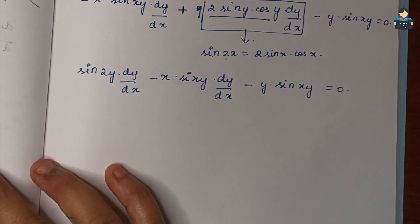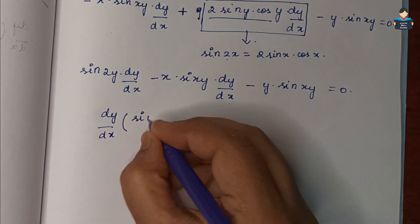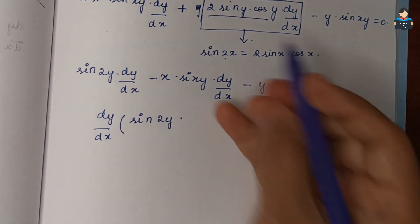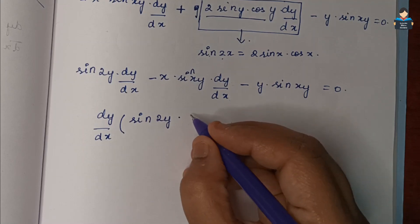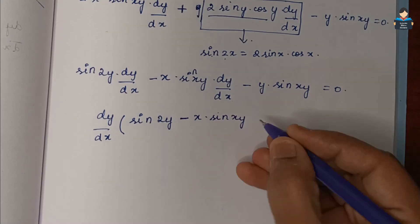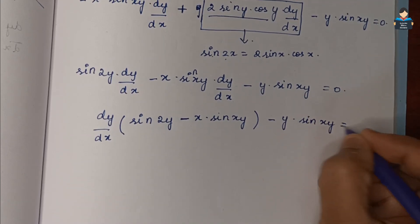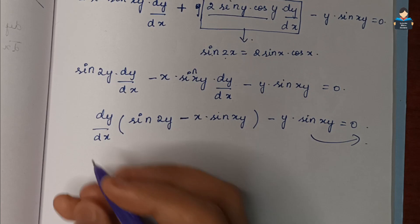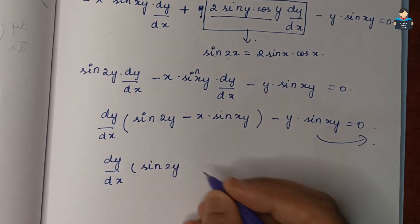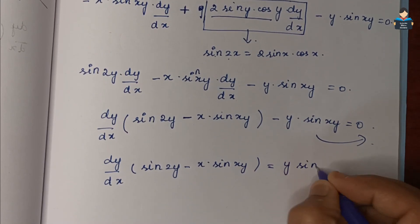Taking dy/dx common from the first two terms: dy/dx · (sin 2y - x · sin(xy)) = y · sin(xy). So dy/dx = y · sin(xy) / (sin 2y - x · sin(xy)).